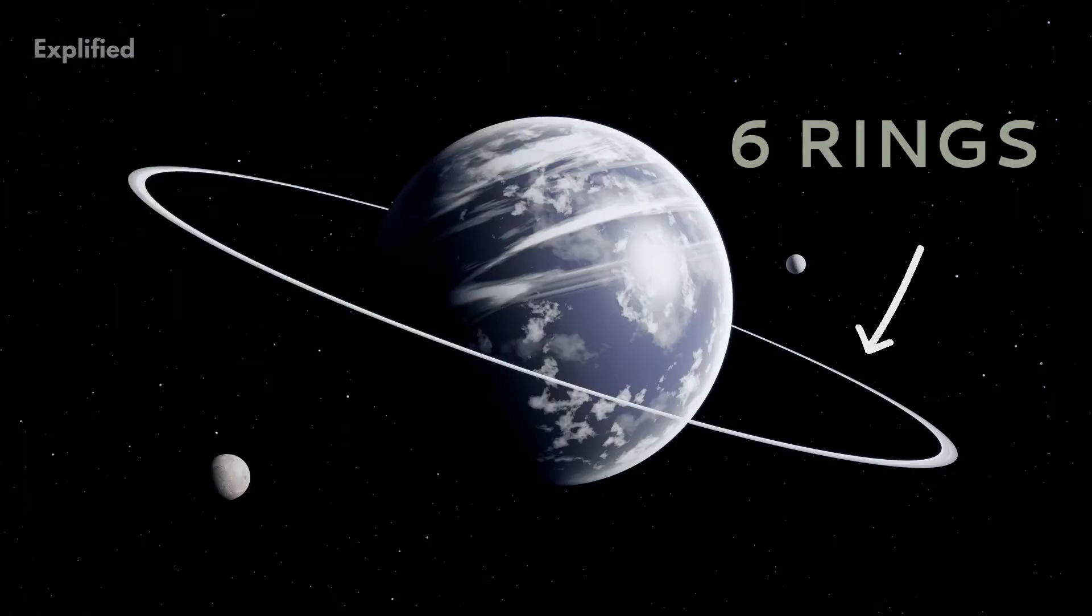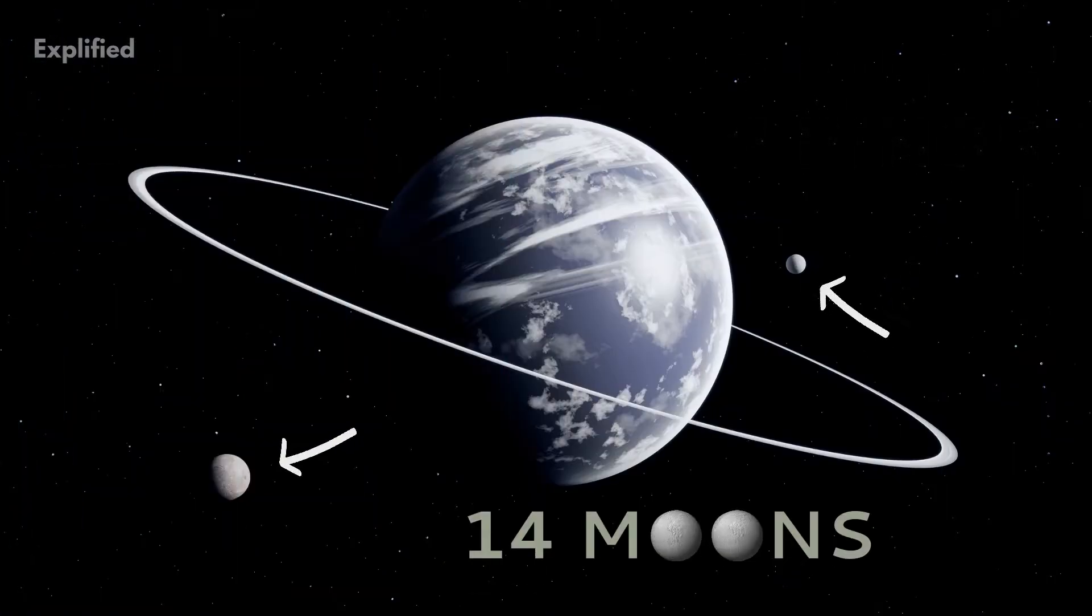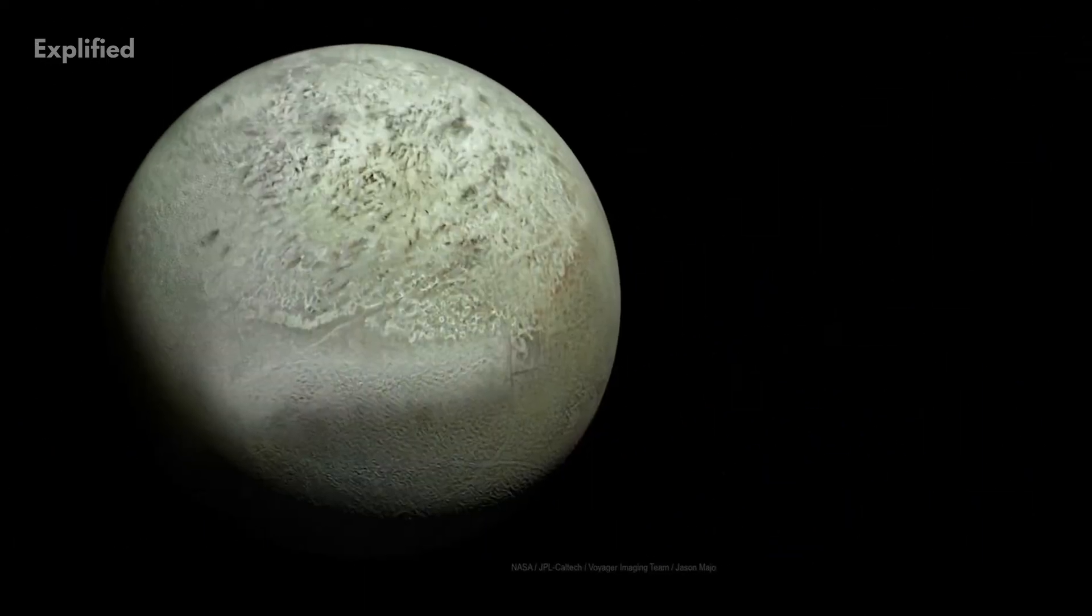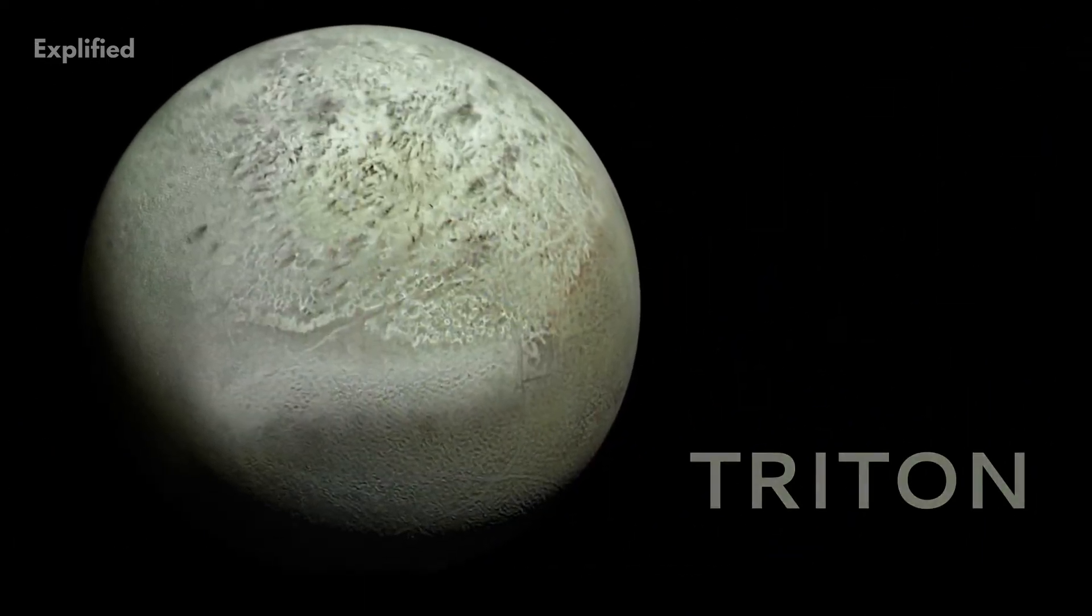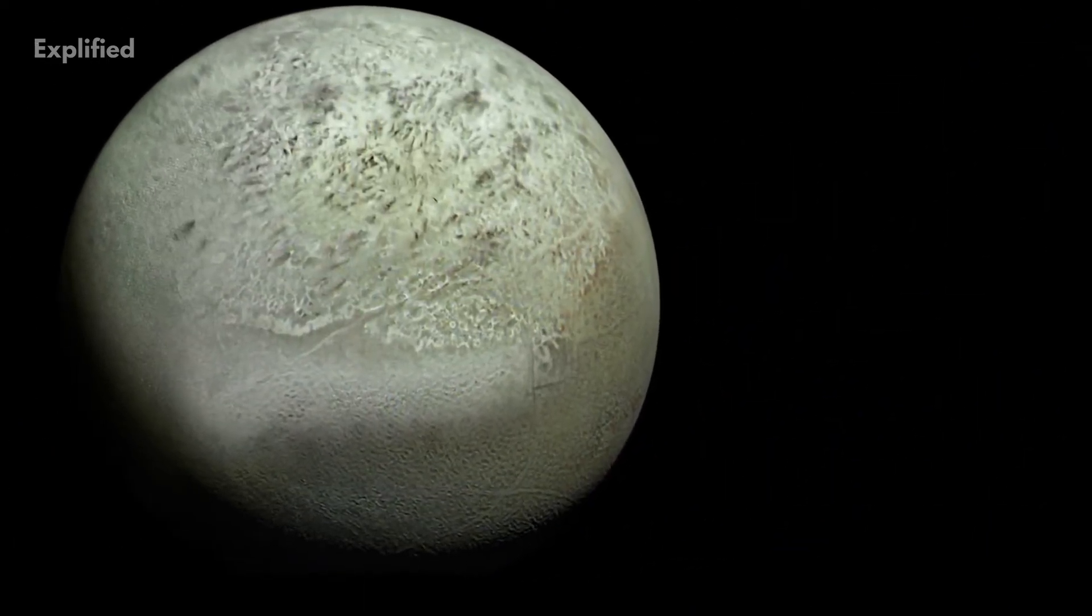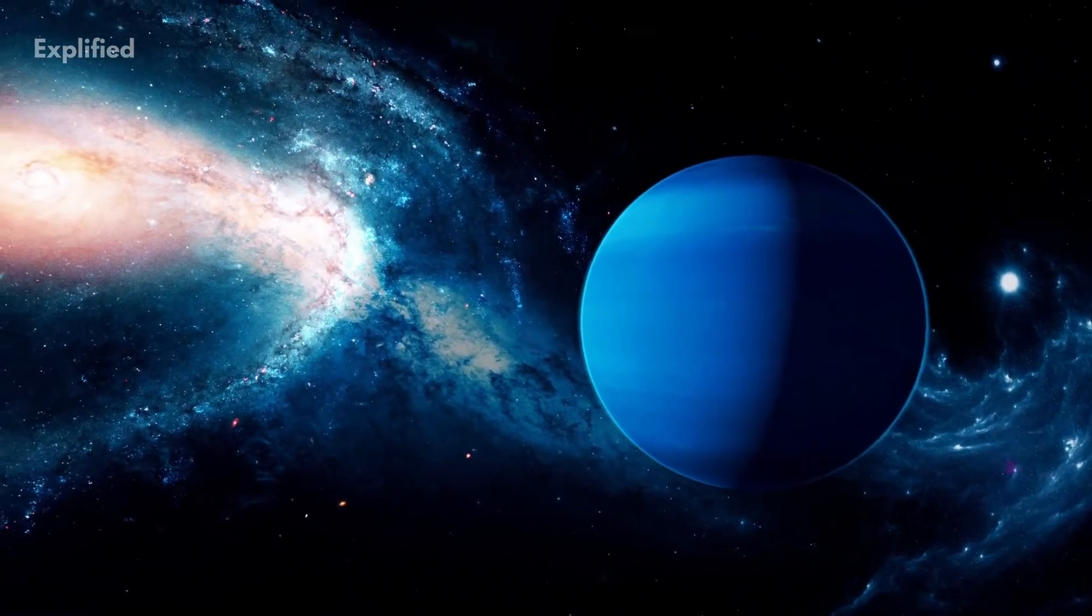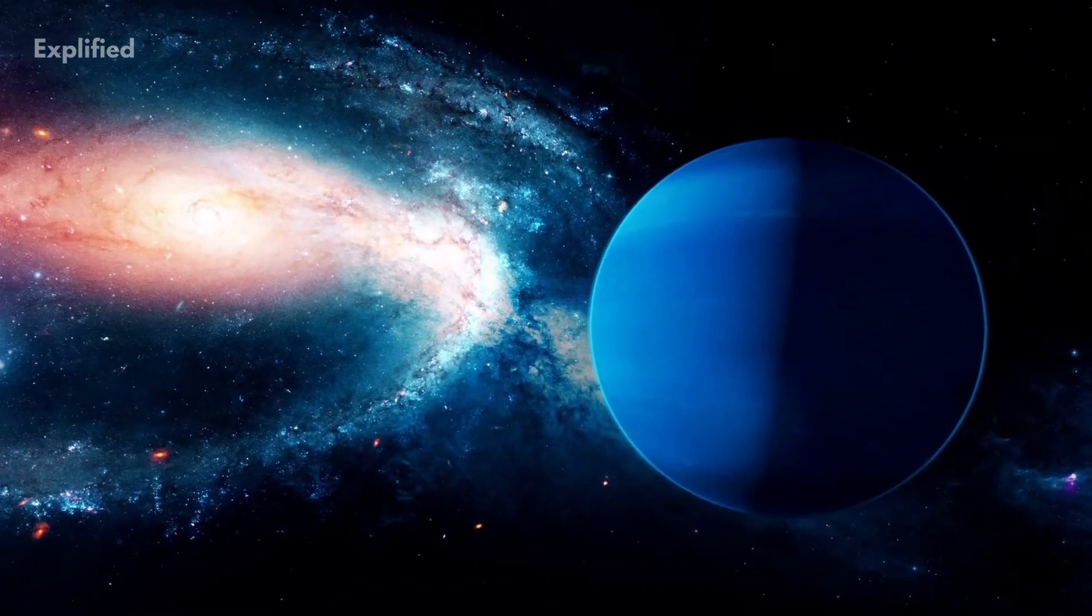Neptune has six known planetary rings and only 14 confirmed moons. One of them, namely Triton, is believed to be a captured dwarf planet. In this video, we present to you eight interesting facts about this gas giant. Let's get started.